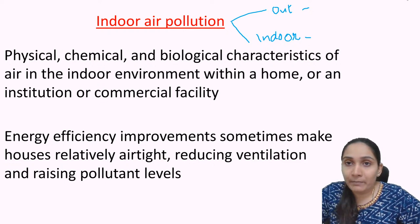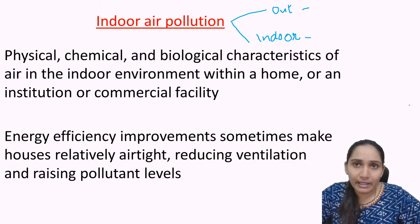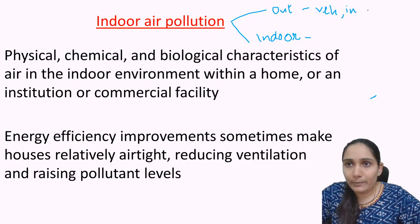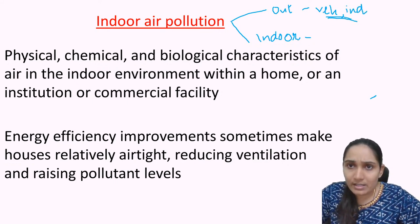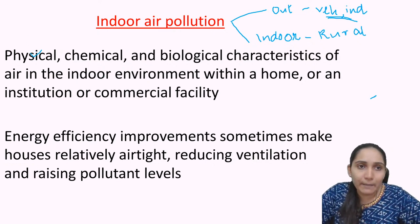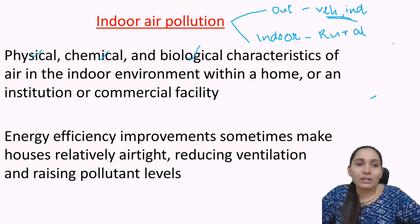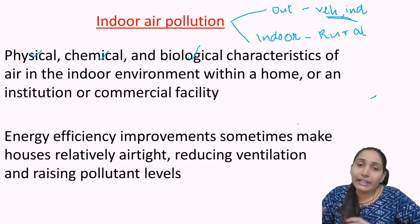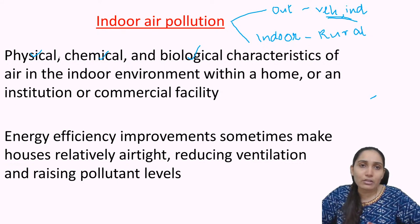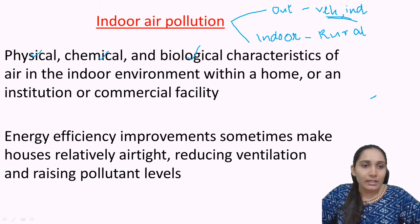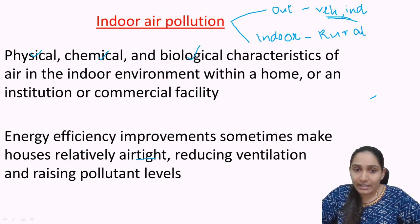Indoor air pollution is high in rural areas, mainly due to the burning of fuel and oil. Outdoor air pollution is high in urban areas because of vehicular emissions and emissions from industries. Indoor air pollution refers to the physical, chemical, and biological changes to the air within a home, institution, or commercial facility. Energy efficiency improvements sometimes make houses relatively airtight, reducing ventilation and raising pollutant levels even higher.